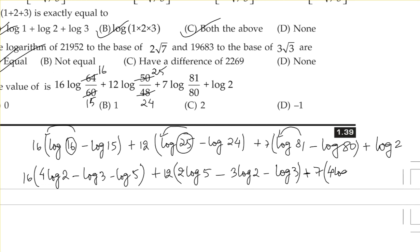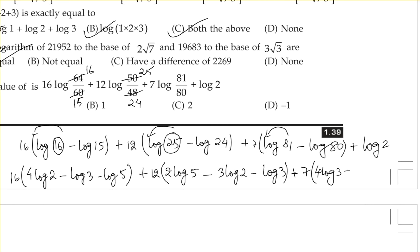Then 81 is 3⁴, so 4 will jump: 4·log 3 multiplied by 7 = 28·log 3, minus 7·log 80. And 80 is 16 × 5 = 2⁴ × 5, so that gives 7·(4·log 2 + log 5) = 28·log 2 + 7·log 5. And at the end plus log 2.